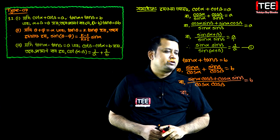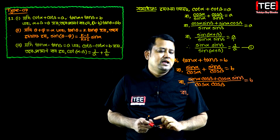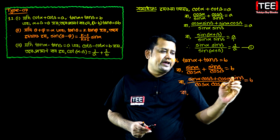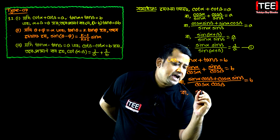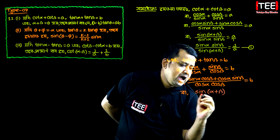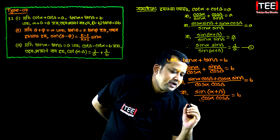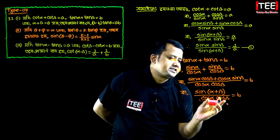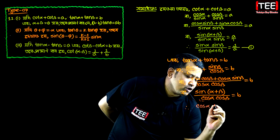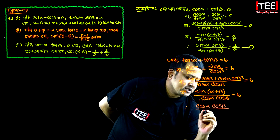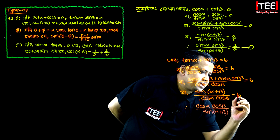If we have 0, then sin alpha cos beta plus cos alpha sin beta, then sin a cos b plus cos a sin b. A means alpha, b means beta. Then sin(alpha + beta) is equal to b. Alpha cos beta is equal to cos alpha cos beta plus sin(alpha + beta) is equal to b minus 1.